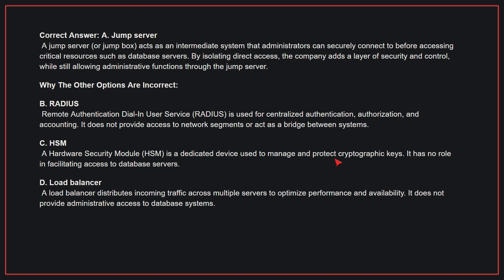A jump server acts as an intermediate system that administrators can securely connect to before accessing critical resources such as database servers. By isolating direct access, the company adds a layer of security and control while still allowing administrative functions through the jump server.